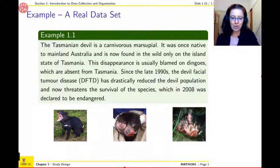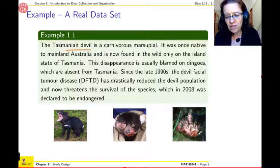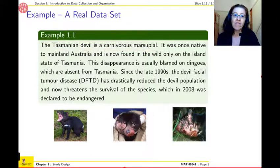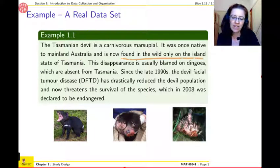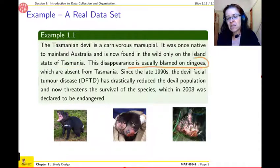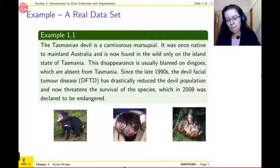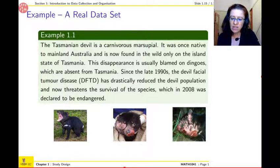So here is my example. So the Tasmanian devil, that's a carnivorous marsupial. It was once everywhere in mainland Australia and now in the world you only find it in Tasmania. And we think that the reason it disappeared is the dingoes, basically the wild dogs, and they are not in Tasmania.